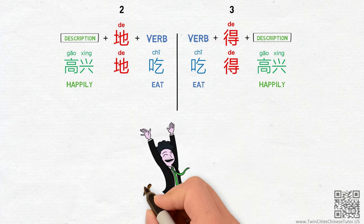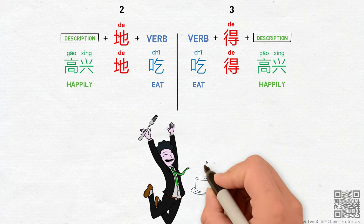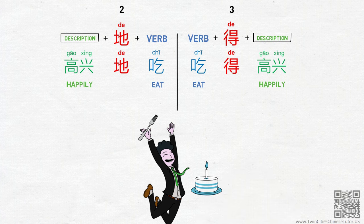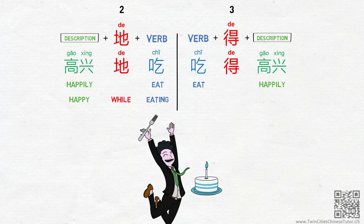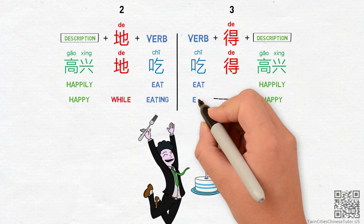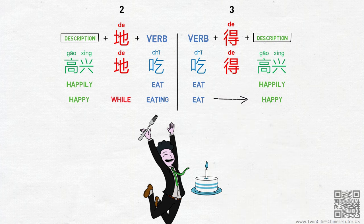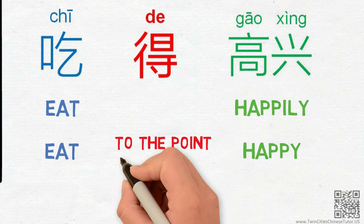Although very often these two patterns are interchangeable, the underlying meaning is a little bit different. When using second 的, the emotion of happiness is accompanying the action of eating. However, with the third 的, the emotion of happiness can be understood as a result of eating. So we can translate the second pattern more accurately as eat to the point of feeling happy.